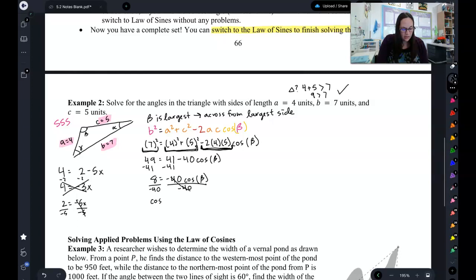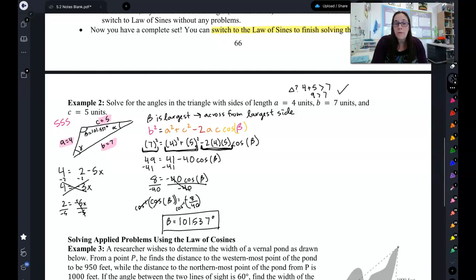So, then I get cosine of beta equals negative 8 40ths. And then, I do my arc cosine to get rid of cosine to figure out that beta is going to be 101.537 degrees. And, just like we thought, it is obtuse. That's why we always solve for the largest angle with the law of cosines because that's the obtuse one. That means the other two will be acute and I can use law of sines to solve for those.